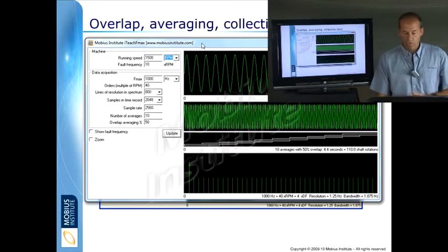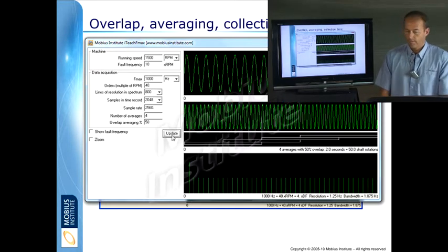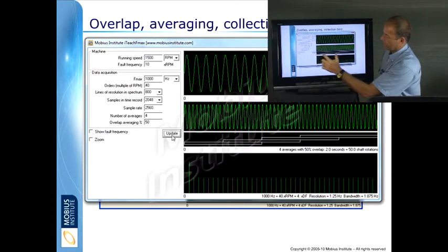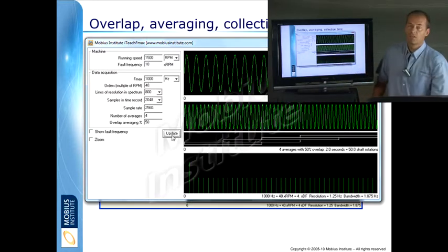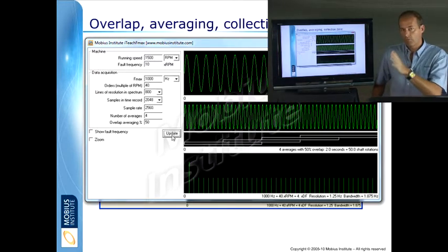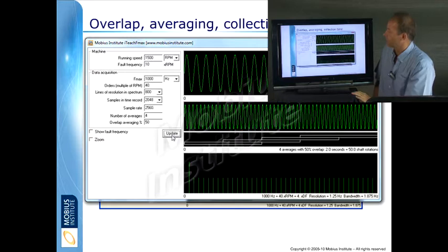But what I can do here is if I say, okay, well what if I've only got four averages instead? You see there's one average, two averages, three averages, four averages. We've got 50 shaft rotations instead. It's not half, even though it went from 10 to 4.